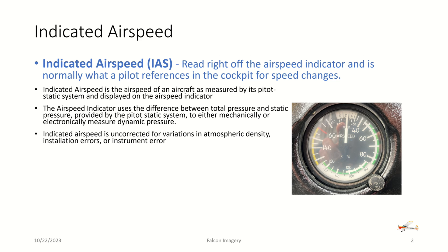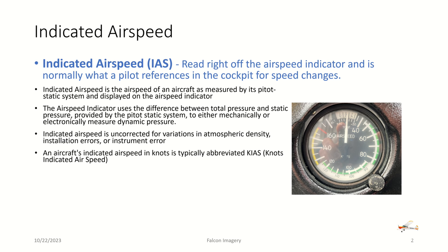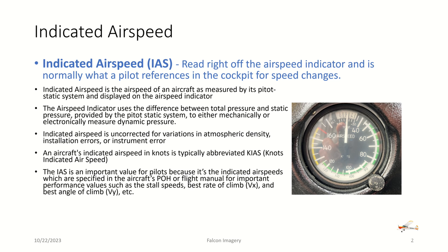Indicated airspeed is uncorrected for variations in atmospheric density, installation errors, or instrument error. An aircraft's indicated airspeed in knots is typically abbreviated KIAS — knots indicated airspeed.